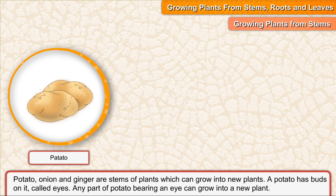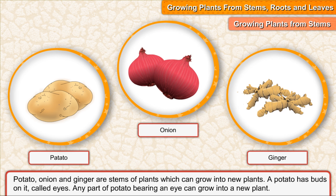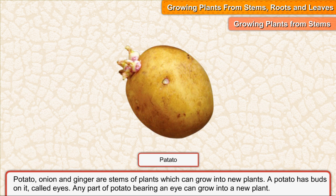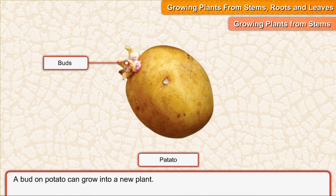Potato, onion and ginger are stems of plants which can grow into new plants. A potato has buds on it called eyes. Any part of a potato bearing an eye can grow into a new plant.